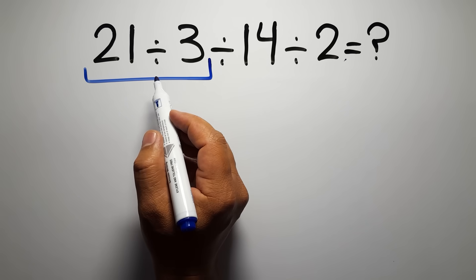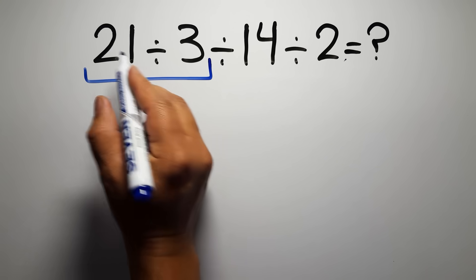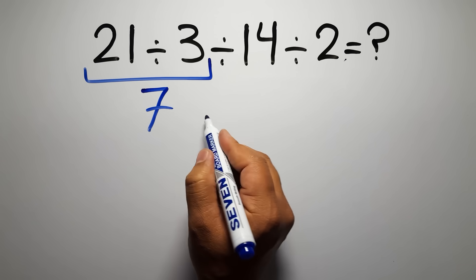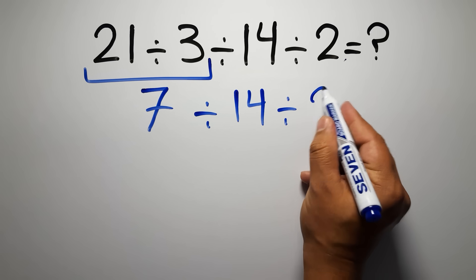So first we have to do this division. 21 divided by 3 gives us 7, so 7 divided by 14, and divided by 2.